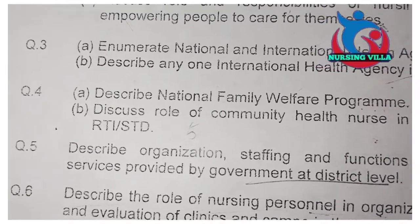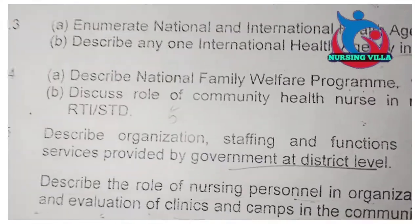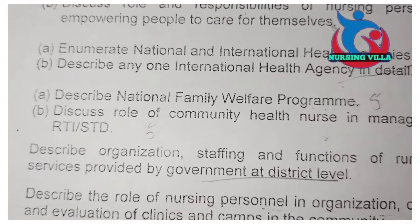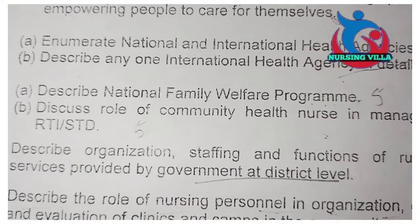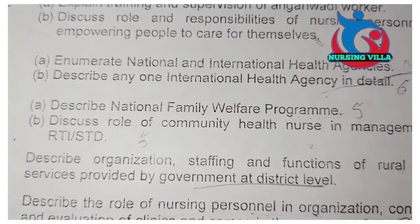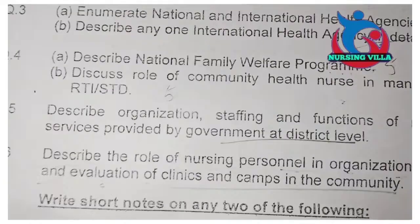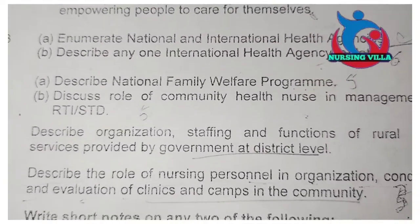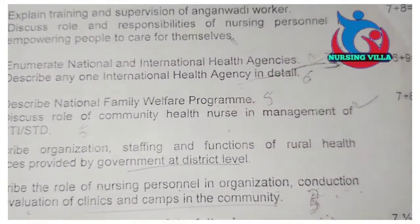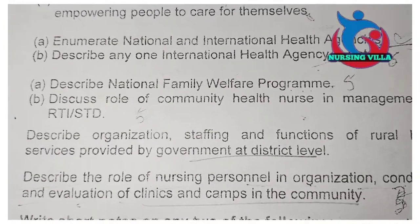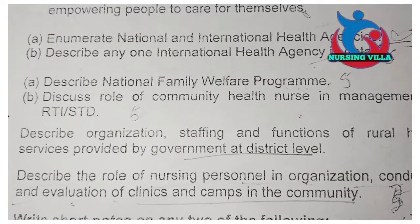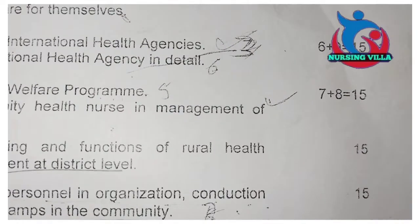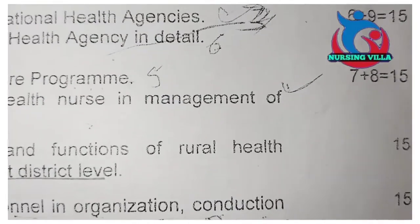The next question is question number 4. It also has two parts, A and B. Question A: describe the National Family Welfare Program. Question B: discuss the role of community health nurses in management of RTI and STD. It also contains 7 plus 8, equal to 15 marks.